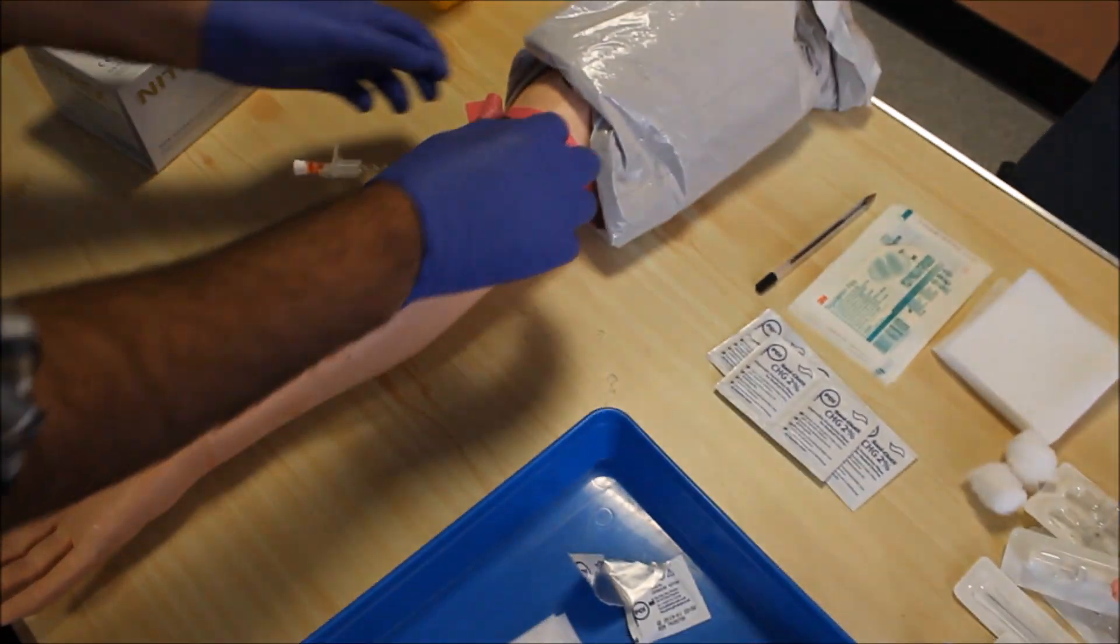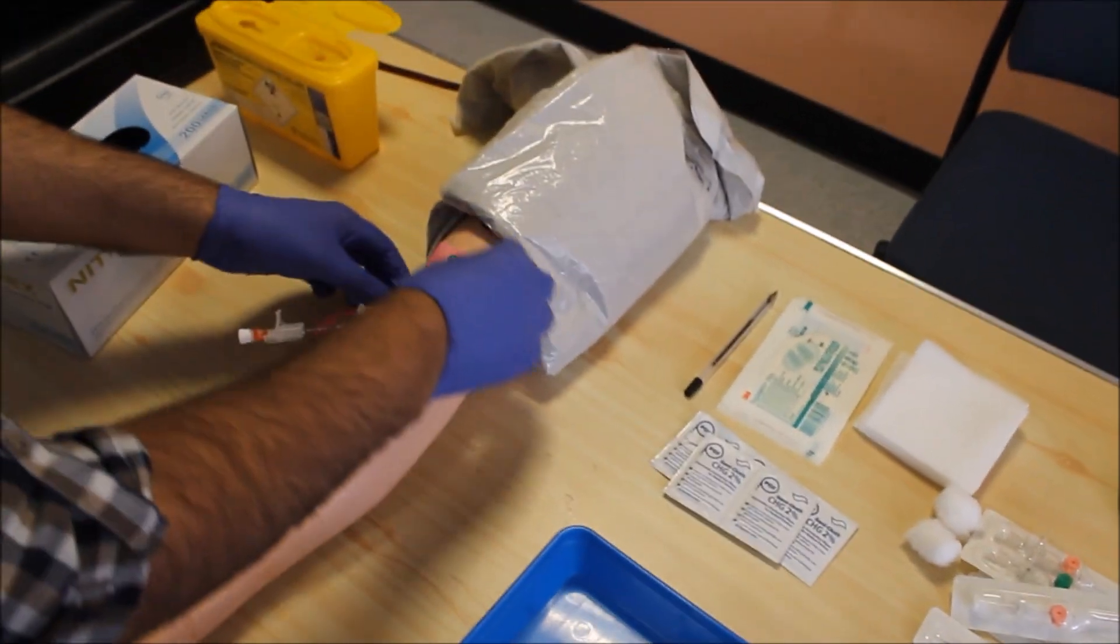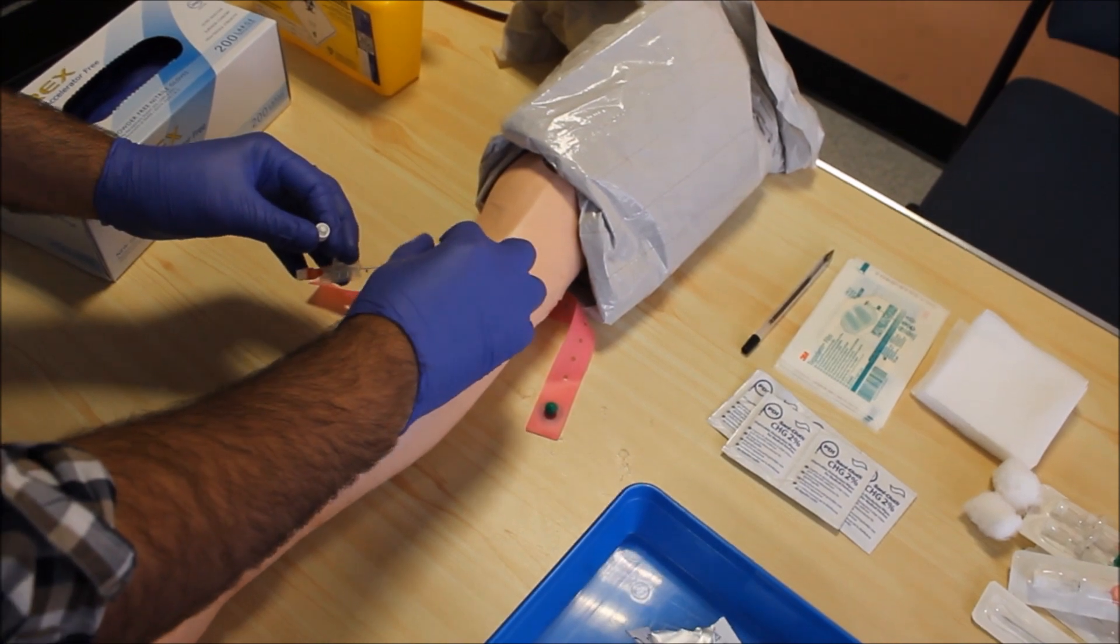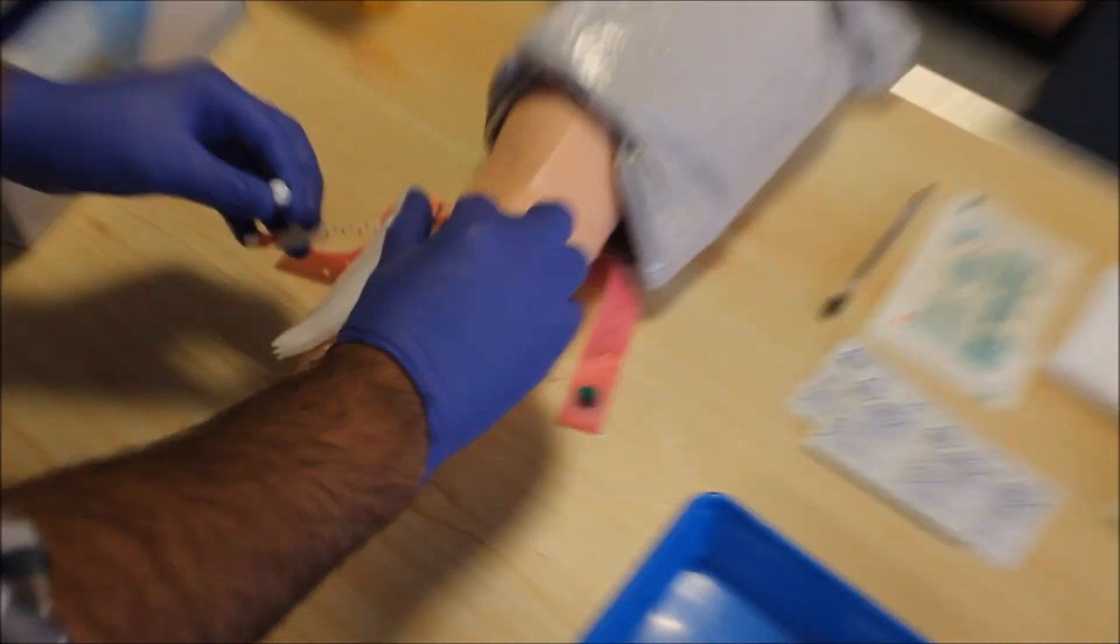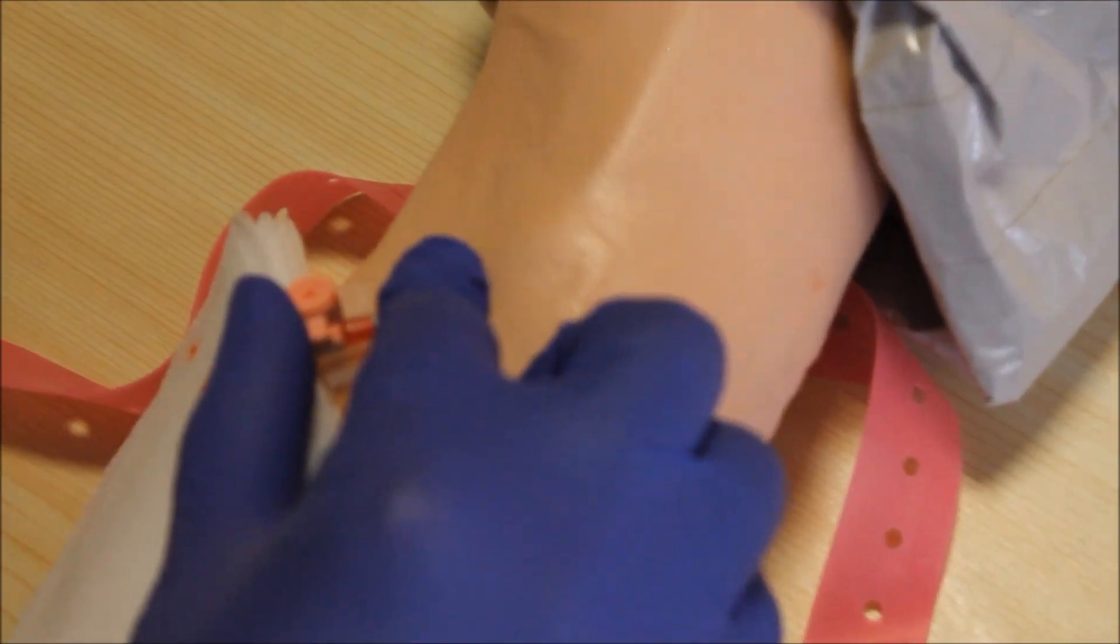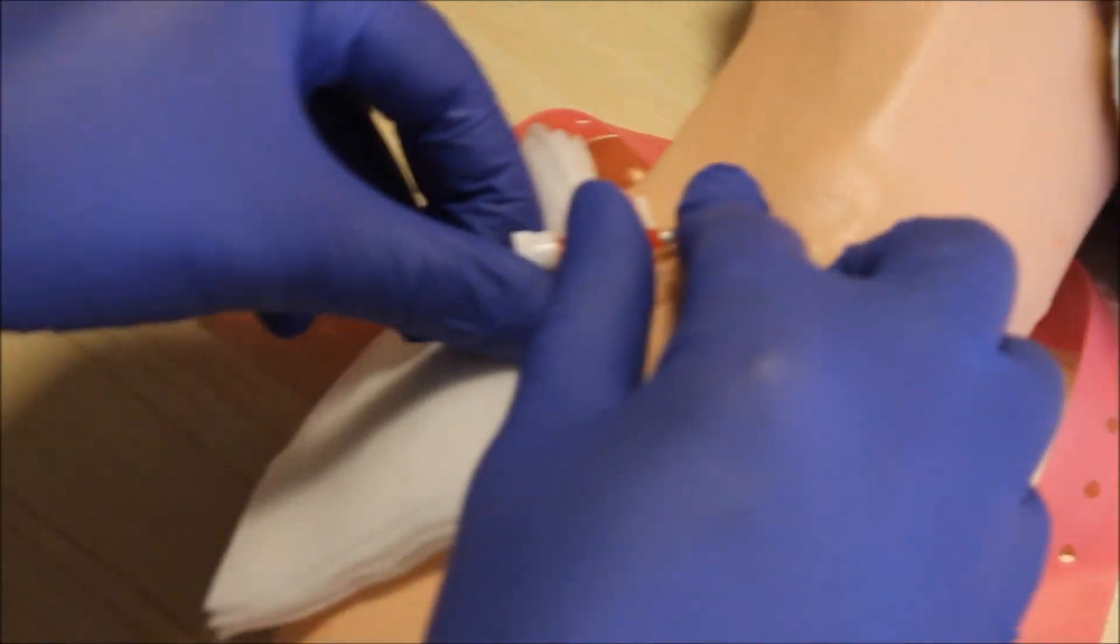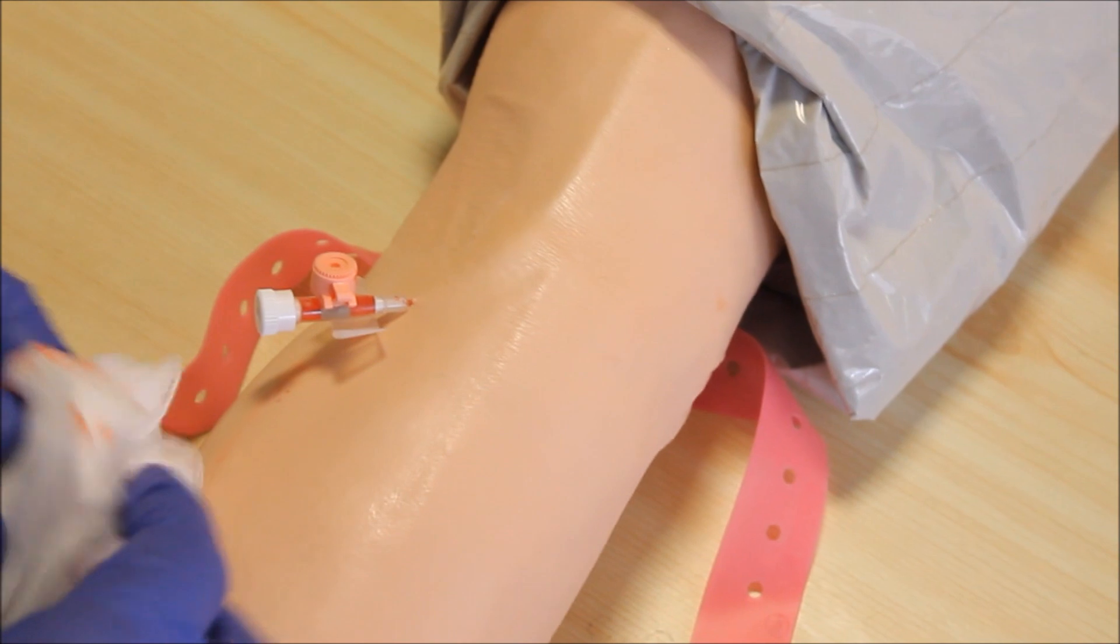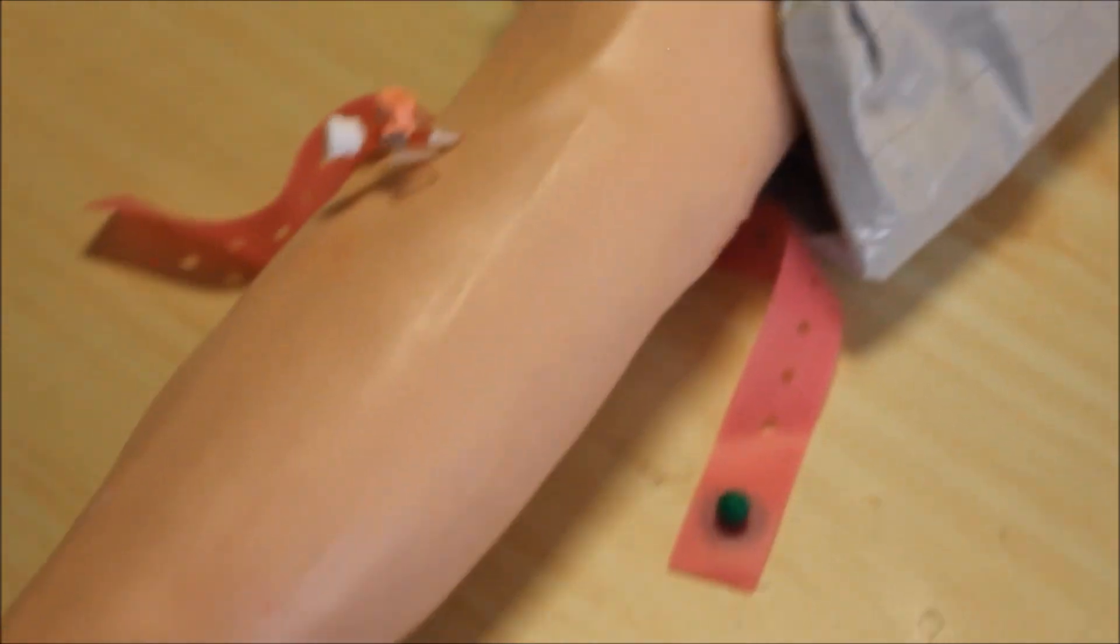After that, you need to remove the tourniquet and remove this. Put your hand over here so that the patient doesn't bleed too much. Throw this away, cap the cannula, and ask the patient to keep very stable.